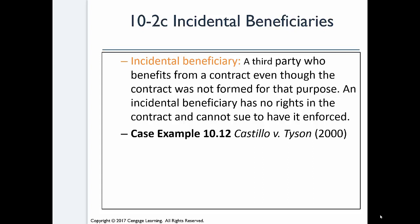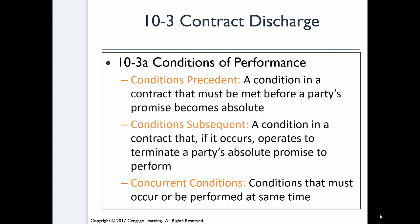Honestly, most contracts are discharged by performance — most contracts do not wind up in law books. But we look at the exceptions. You have to understand conditions precedent, conditions subsequent, and concurrent conditions. Concurrent conditions are those that occur at the same time. A condition precedent is a condition in a contract that must be met before the promise becomes absolute. Conditions subsequent are the opposite — if the condition occurs, it terminates a party's absolute promise to perform.